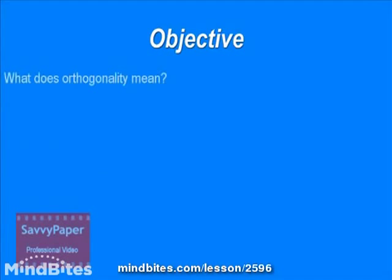What does being orthogonal mean? Two signals are said to be orthogonal if their dot product is equal to zero. Dot product is just a fancy way of saying you multiply the two signals together and integrate the result. When you do that, you should get zero. Most of us in the RF test world are used to thinking of it as simply the two signals being perpendicular to one another.